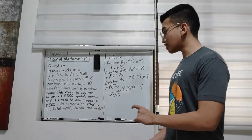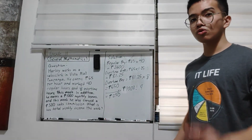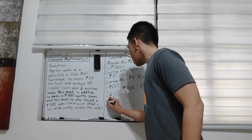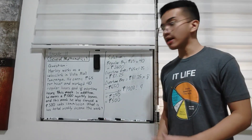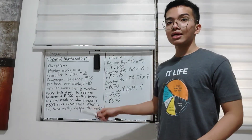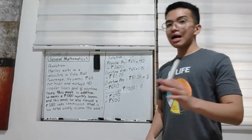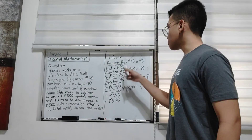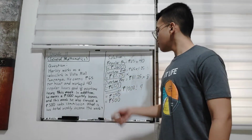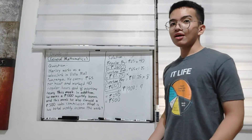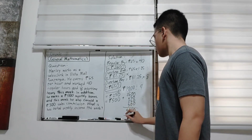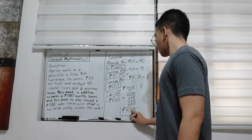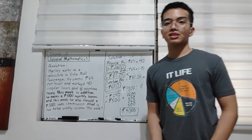He also earned a 500 pesos sales commission this week, so we add that as well. Now we have his regular pay, overtime pay, weekly share of the monthly bonus, and sales commission. We add them all: 2,600 + 650 + 250 + 500, which gives us the total weekly income of 4,000 pesos.